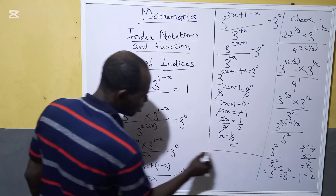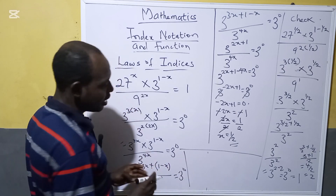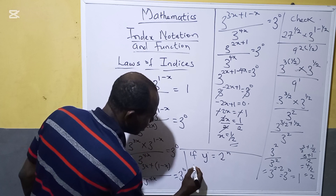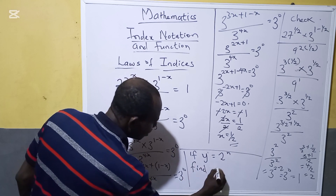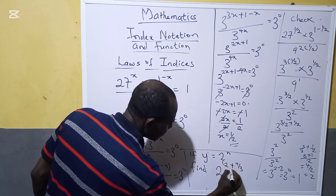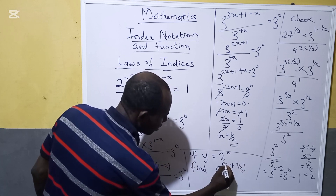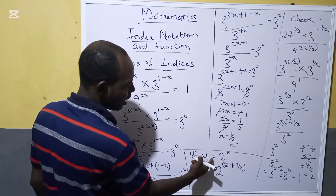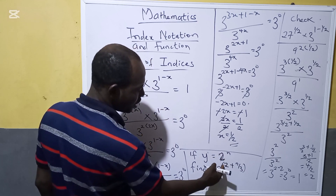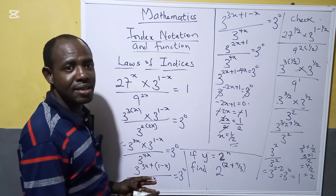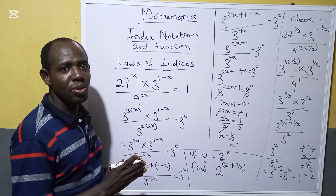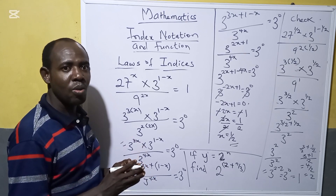So my viewers, I want to give you a question to solve — put your answer in the comment section. If y equals 2n, then find 2 raised to the power of 2 plus n, over 3. You can leave your answer in the comment section. I hope you get this. Please continue watching my channel for more videos on mathematics. Thank you.